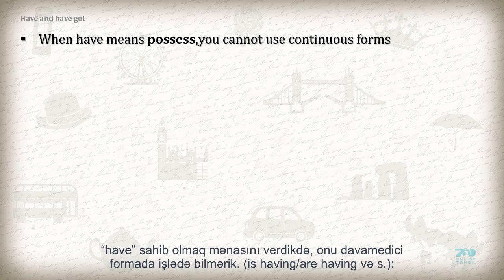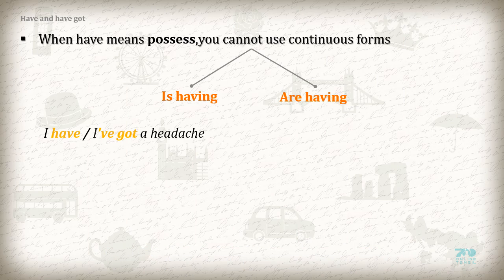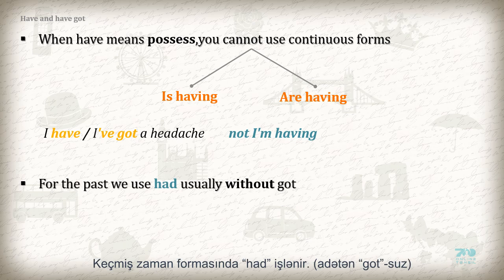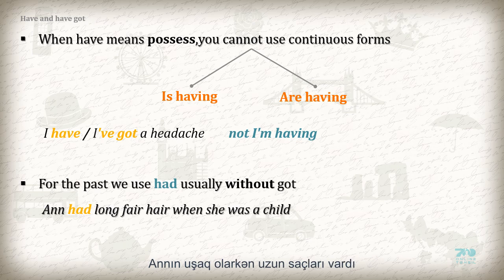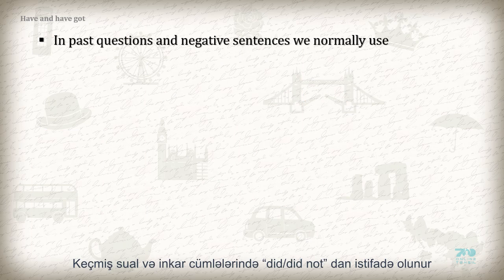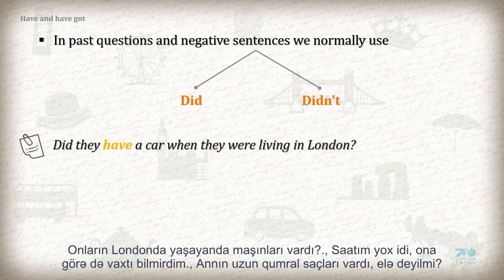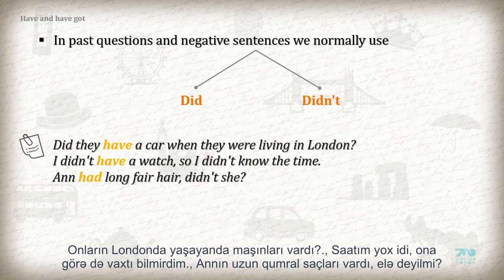When have means possess, etc., you cannot use the continuous form — is having, are having, etc. I have / I have got a headache. Not: I am having. For the past we use had, usually without got. Anne had long fair hair when she was a child. Not: Anne had got. In past questions and negative sentences, we normally use did/didn't. Did they have a car when they were living in London? I didn't have a watch so I didn't know the time. Anne had long fair hair, didn't she?